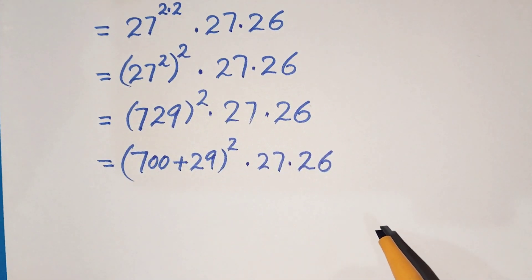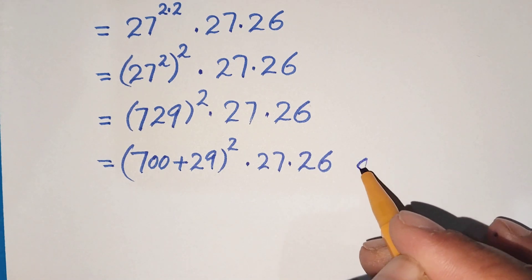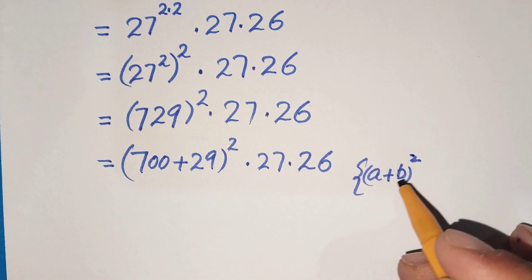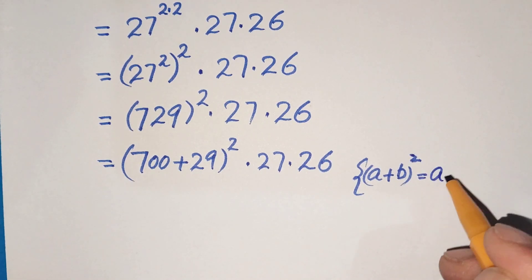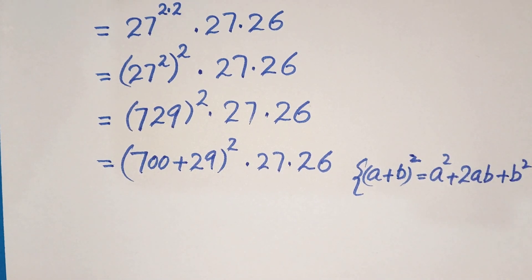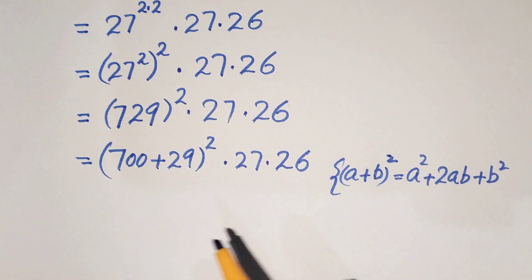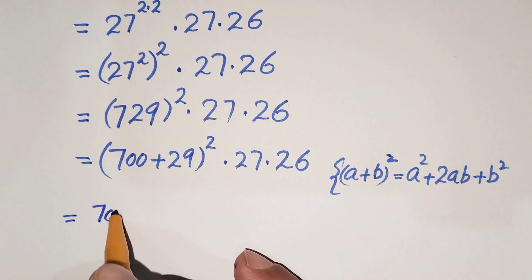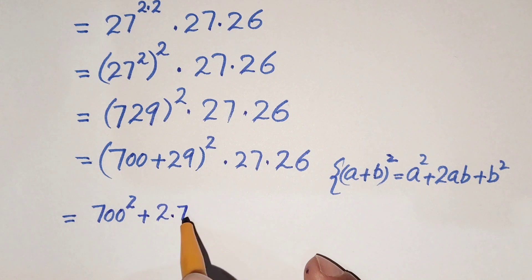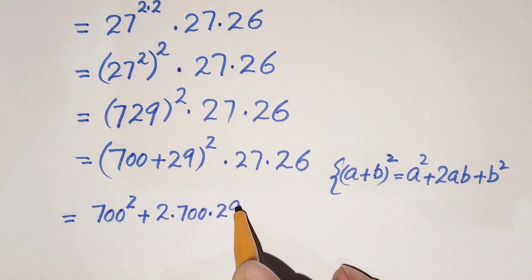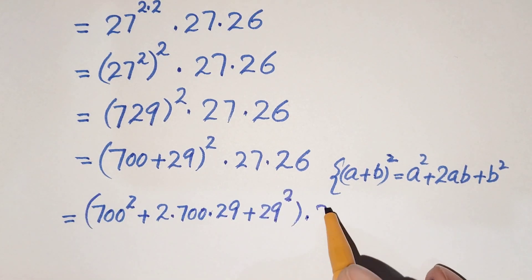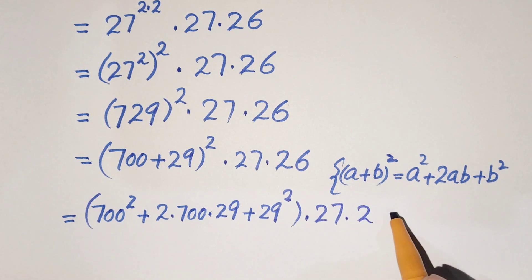Using the algebraic law: a plus b whole squared equals a squared plus 2 times a times b plus b squared. This is the basic algebraic formula. Applying it here, we get 700 squared plus 2 times 700 times 29 plus 29 squared, all times 27 times 26.